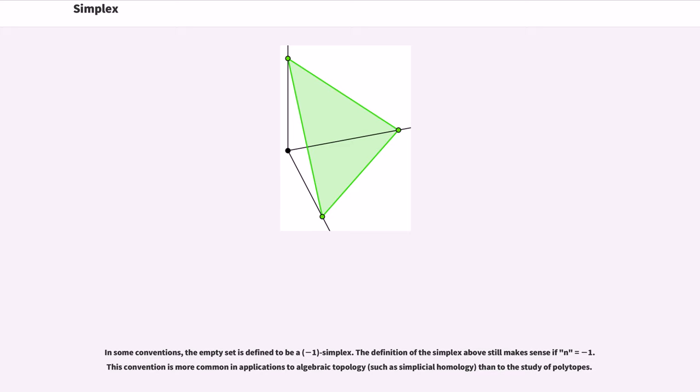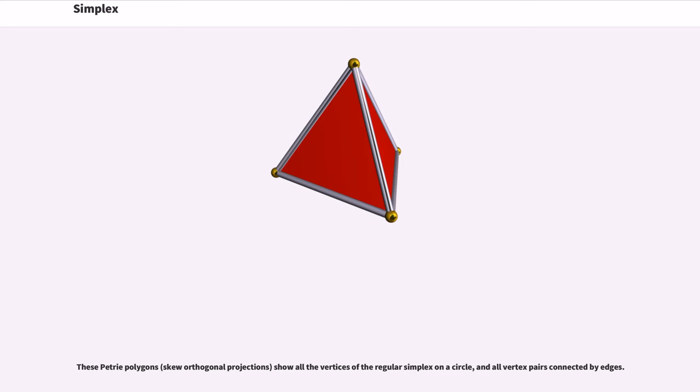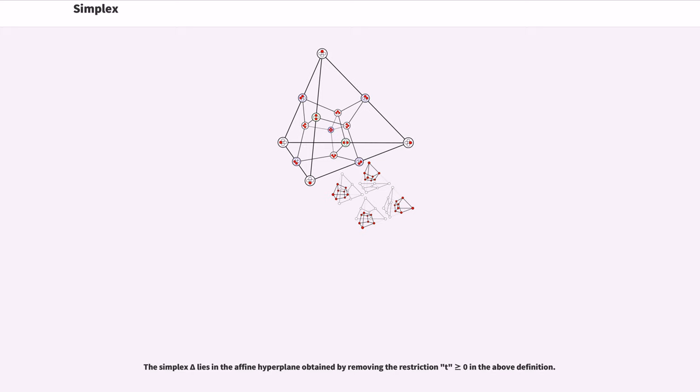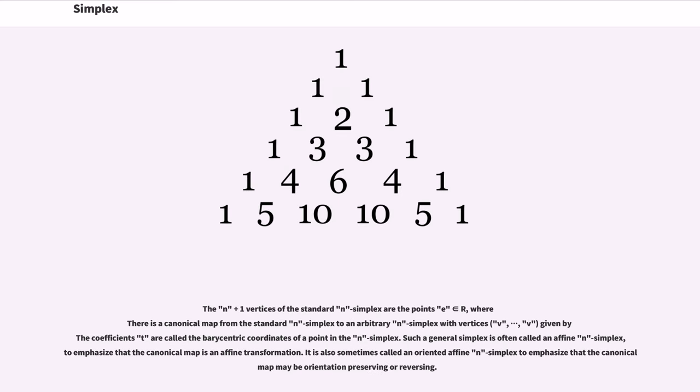In some conventions, the empty set is defined to be a negative-1 simplex. The definition of the simplex above still makes sense if n equals minus 1. This convention is more common in applications to algebraic topology than to the study of polytopes. These Petrie polygons show all the vertices of the regular simplex on a circle, and all vertex pairs connected by edges. The standard n simplex is the subset of R^{n+1} given by the simplex delta. The n plus 1 vertices of the standard n simplex are the points e_i. There is a canonical map from the standard n simplex to an arbitrary n simplex with vertices. The coefficients t_i are called the barycentric coordinates of a point in the n simplex.